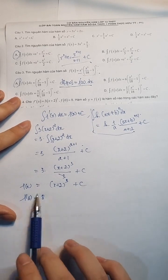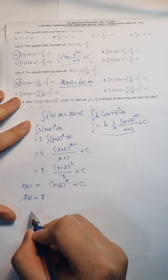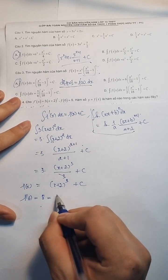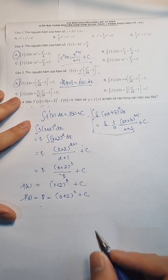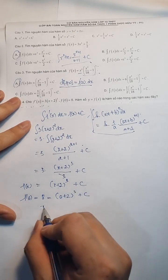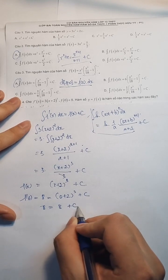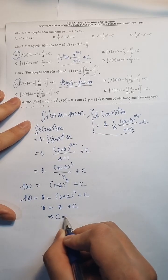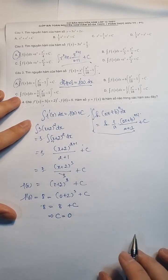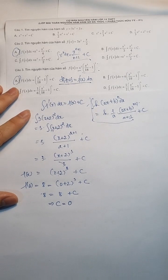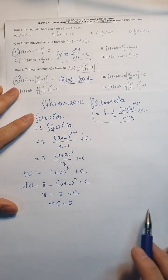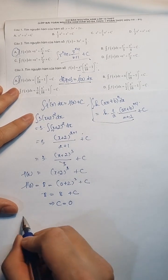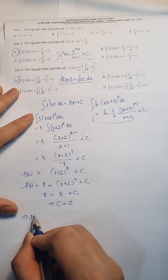F(0) bằng 8. Thì bây giờ mình thay 0 ở đây thôi. Thay 0 vào nhé. Thì là (0+2)³ cộng C. Vậy là 8 thì bằng 8 cộng C. Từ đây suy ra C bằng 0. C bằng 0. C bằng 0 thì các bạn thay lên đây. Thì từ đây anh suy ra được F(x).